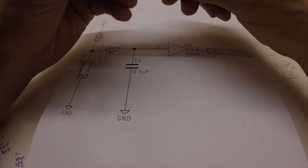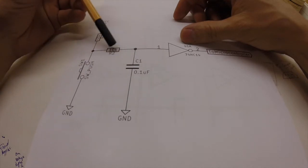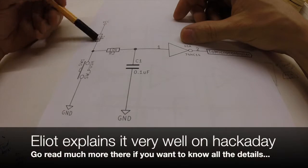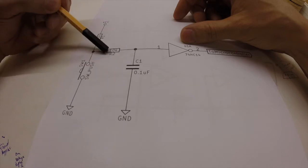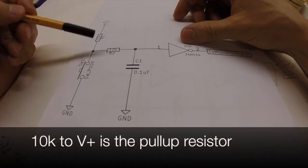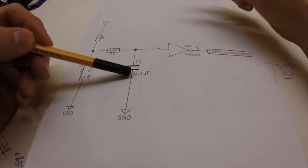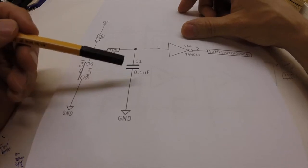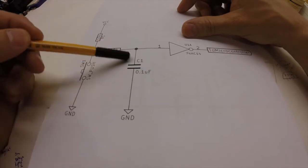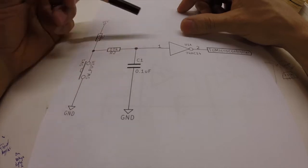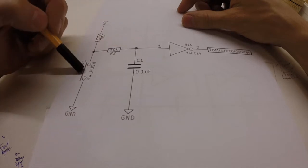So before the hex Schmidt trigger you need a smooth out circuit. So there's a 10k to voltage plus and ground. And then you have this 10k resistor here and this 0.1 microfarad or 100 nanofarad capacitor connected to ground.